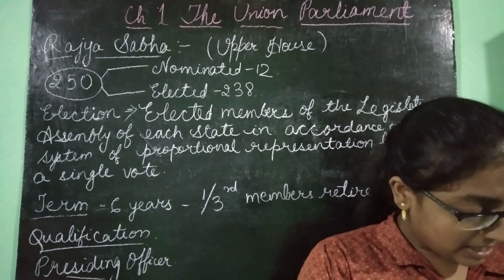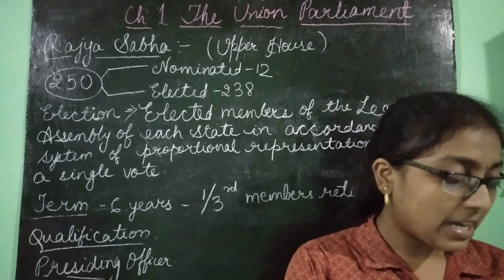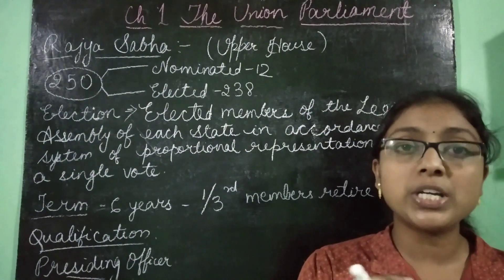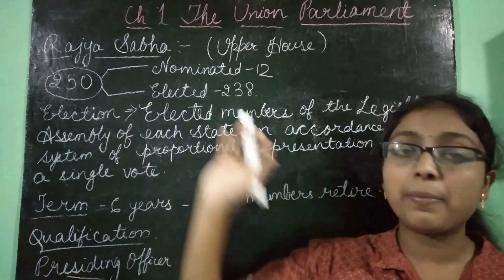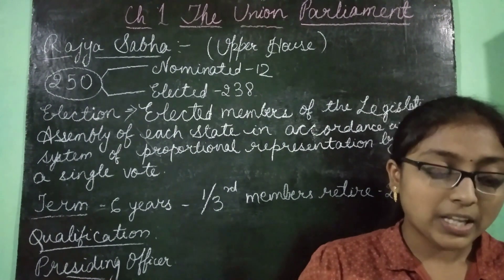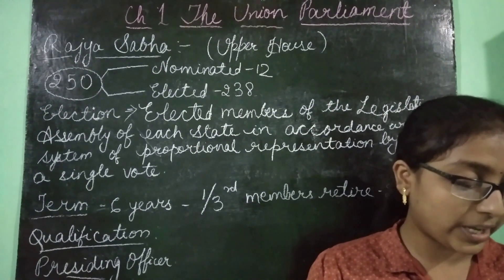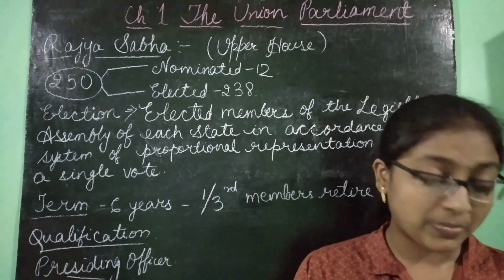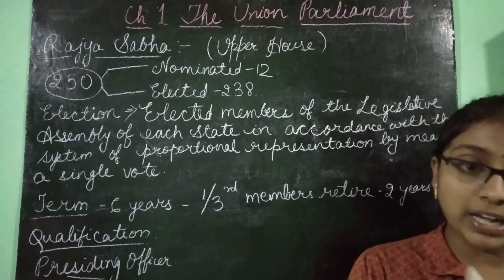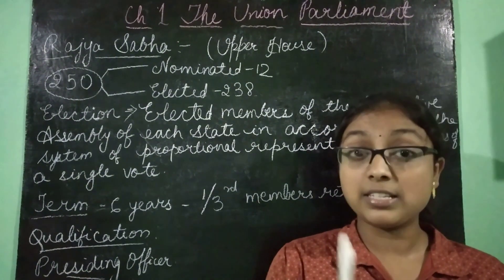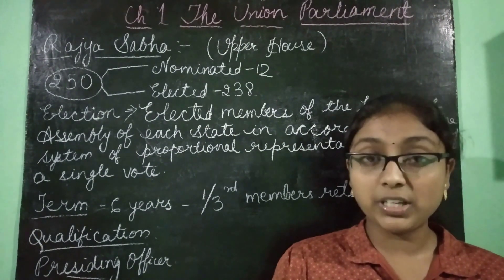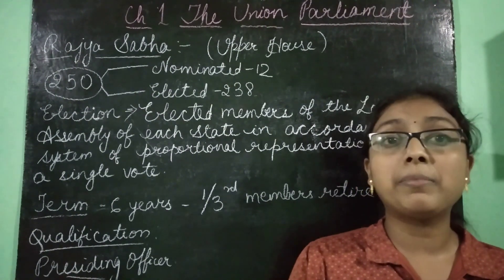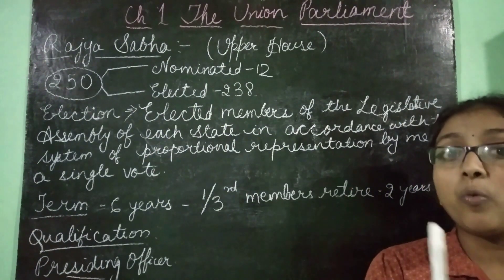Representation in Rajya Sabha is population-based. Whereas Arunachal Pradesh has only one member and Goa also has one member because their population is small, Maharashtra has 19 members. Uttar Pradesh, where population density is very high compared to all other states, represents 31 members in Rajya Sabha.